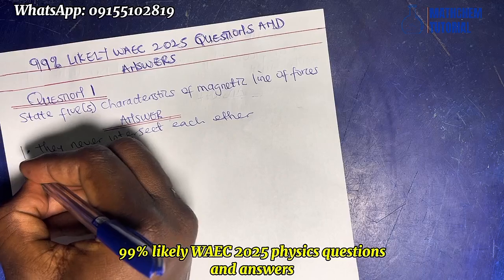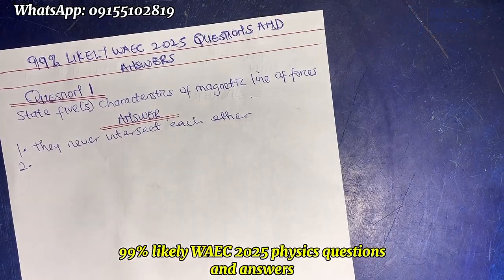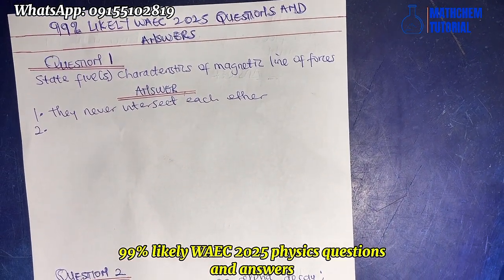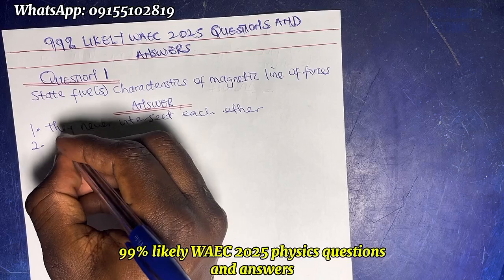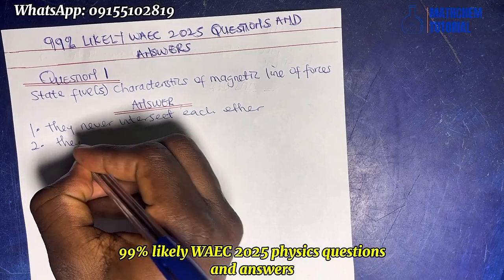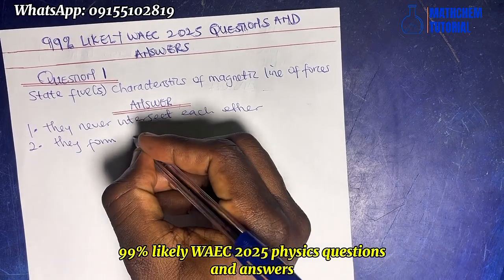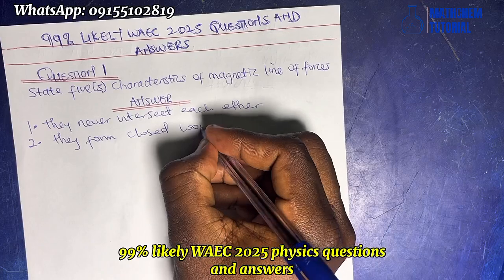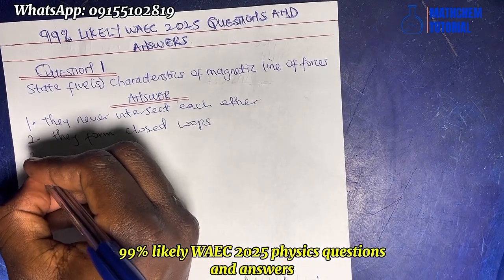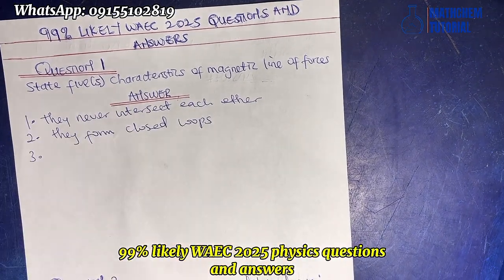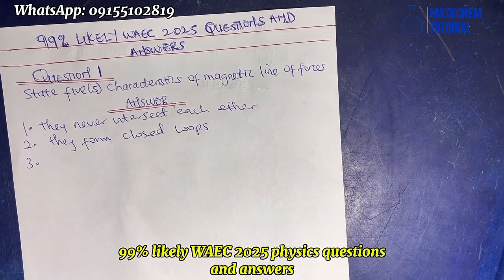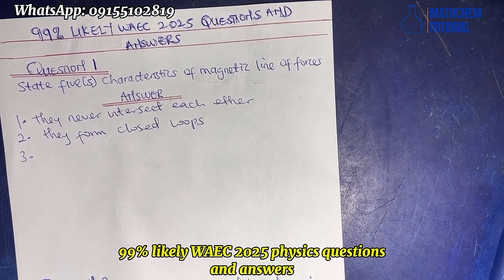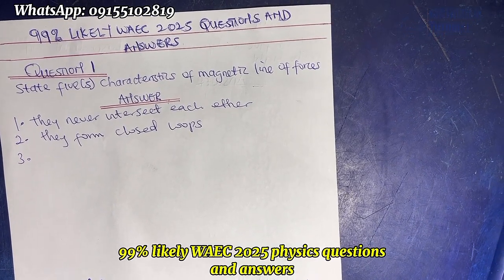Number two is that they form closed loops. Number three is that they are closer where the magnetic field is stronger.